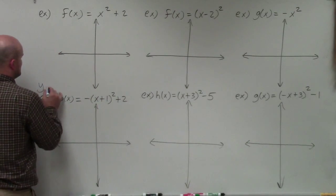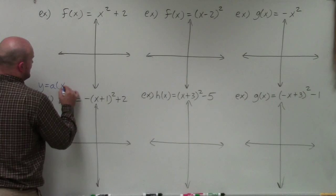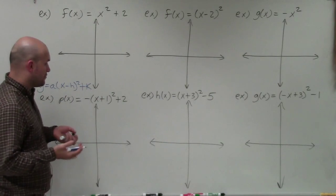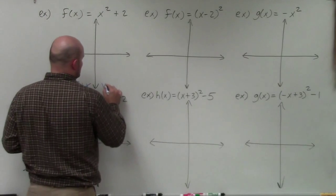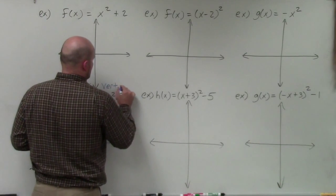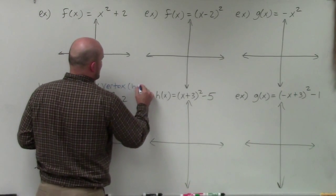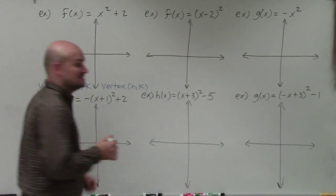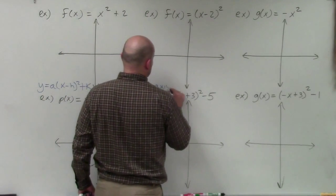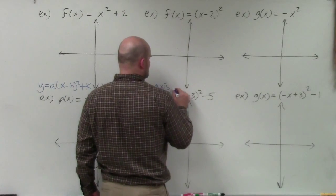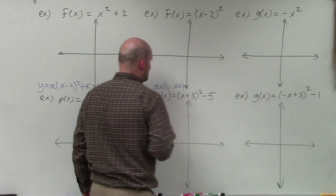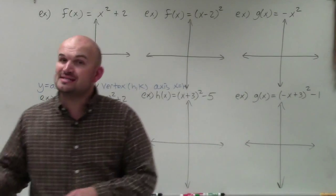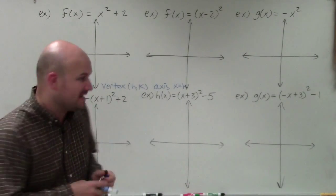Vertex form is y equals a times x minus h squared plus k. What's nice about vertex form is we can easily identify the vertex as h comma k. We can also identify the axis of symmetry as x equals h. So it's really easy to figure out the vertex and axis of symmetry, and that's going to help us graph it.